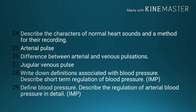Number 24, describe the character of normal heart sounds and a method for recording. Number 25, arterial pulse. Number 26, difference between arterial and venous pulsation. Number 27, jugular venous pulse. Number 28, write down definitions associated with blood pressure. Number 29, describe short-term regulation of blood pressure; define blood pressure; describe the regulation of arterial blood pressure in detail.